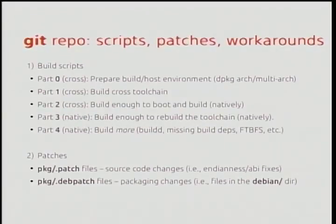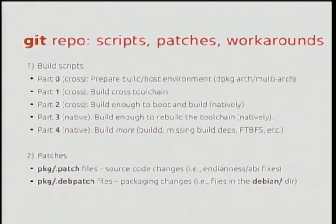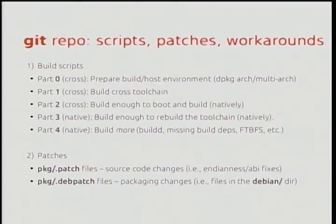Our patches were organized in a per-package directory hierarchy, and we had two types of patches. The first are normal .patch files for changing the source code in a package — the application itself — in case we had to fix something for the new endian mode, different bit numbers, or the ABI changes we were making. And also the .debpatch files, which were changes exclusively to the packaging part of that source package — specifically the files in the Debian directory, where you tell how the package is going to build, which packages it builds, and all that.